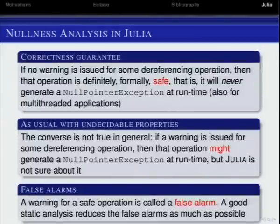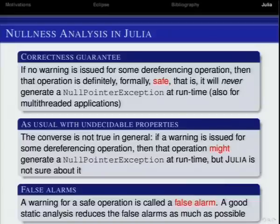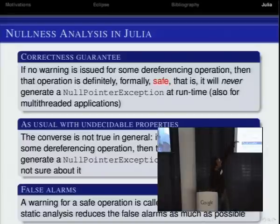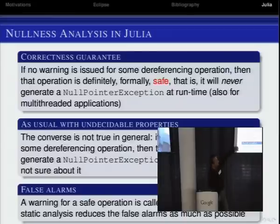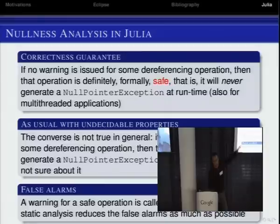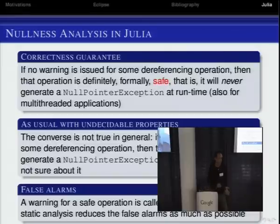The correctness guarantee is: if the tool says it's okay, you can sell the program as okay — you can trust it. Since the property is undecidable, there will be cases where you get a warning which is a false alarm. The goal is to limit the number of false alarms. If you get 1,000 false alarms you'll throw away Julia and never use it. But if you get three or ten false alarms, you can check your application — ten checks are okay, but 1,000 are not.